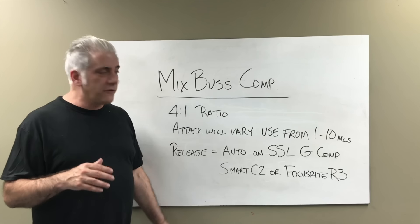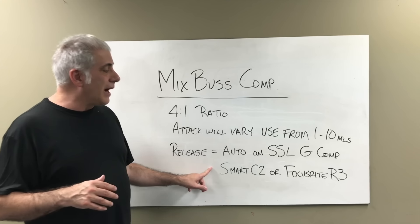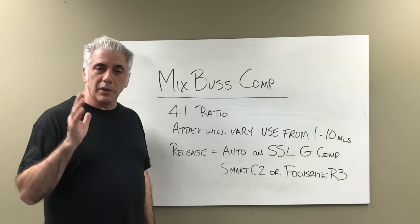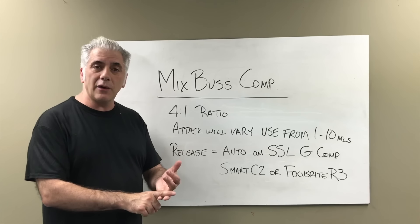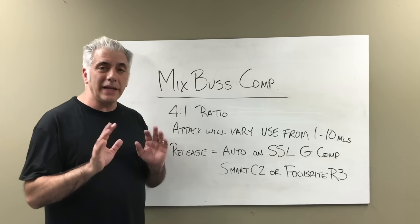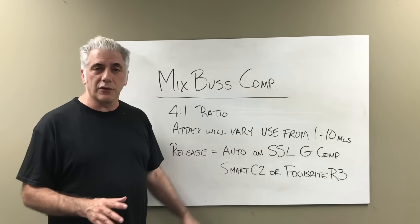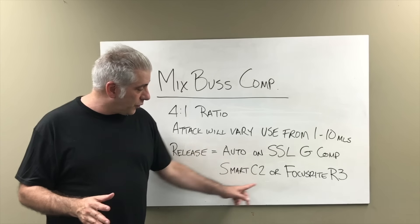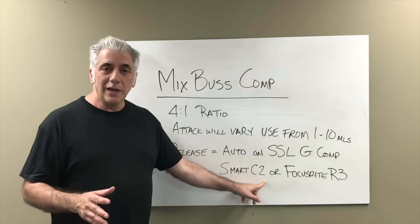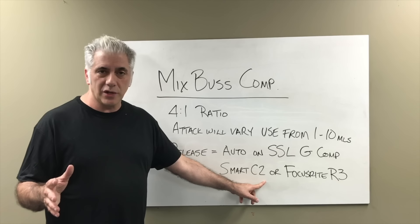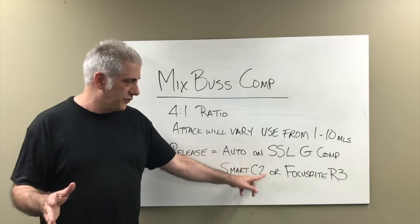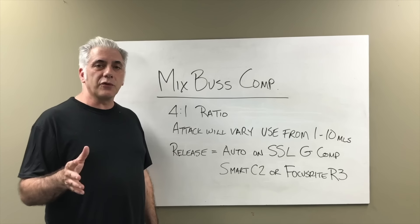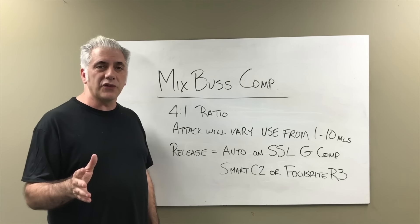The attack time will vary usually from 1 to 10 milliseconds. The release time — if you're using an SSL compressor, most mixers use the auto release, whether it's the Waves plug-in, the Universal Audio one, or SSL's own version. There are many different G+ compressors out there in the plug-in world. The same goes for the Allen Smart C2 — whether hardware or software emulation, it's essentially a copy of the SSL G Series compressor. Or the Focusrite Red 3, which is the compressor Chris Lord-Alge uses — he uses the auto release on that as well.